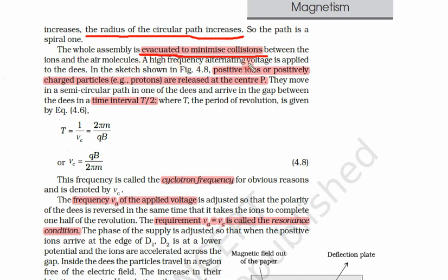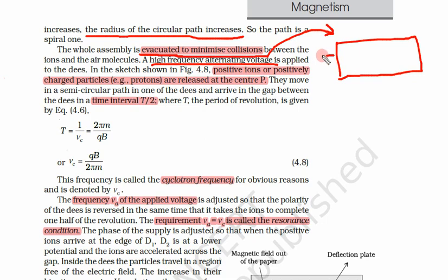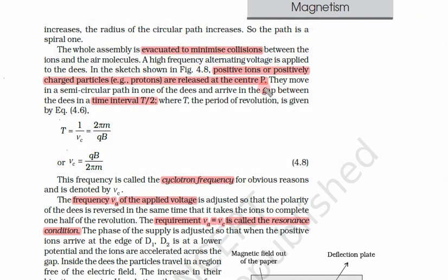A high-frequency alternating voltage is applied to the D's. This is done by the oscillator, which rapidly changes the voltage from positive to negative and back — at a very high frequency. This high-frequency alternating voltage is what the oscillator provides.